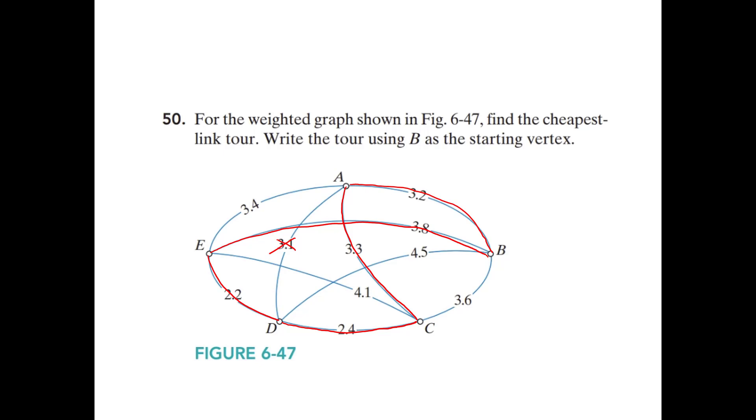Now, write the tour. So for the weighted graph shown in figure 647, find the cheapest link tour, and then write the tour using B as the starting vertex. So we can start at B, and then follow the circuit, and go to E. And then from E, we go to D. And then from D, we go to C. And then from C, we go to A. And then from A, we go all the way back to B.